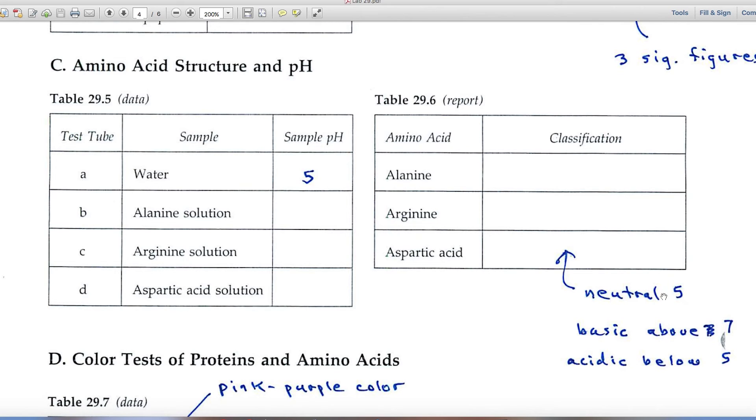If you've got a neutral solution, well, it's going to stay around pH of 5. If you've got a basic solution, it's going to be higher than that, maybe up in the 7 or greater range. And an acidic would be pH 5 or below.